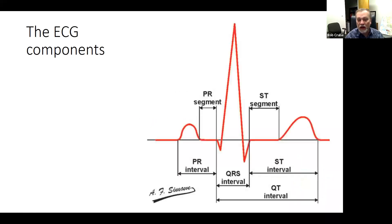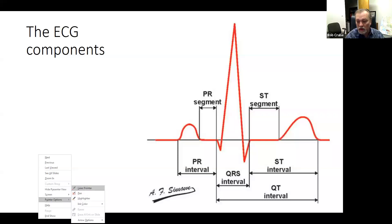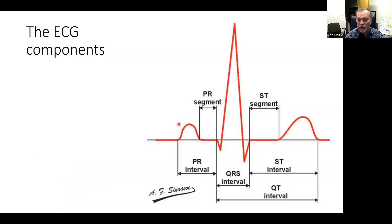First of all, let's take a look at the EKG components. We have a P wave, and we all know that is the depolarization of the atria. Then we have a PR interval — that's the segment of time from the start of the P wave to the start of the QRS complex. The PR segment is the time after the P wave when the line gets back to baseline.